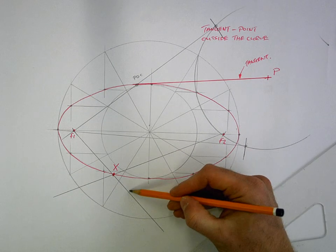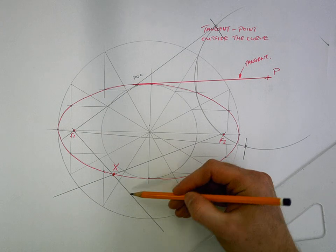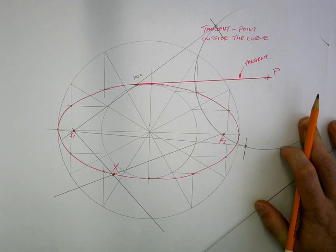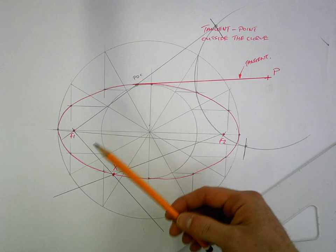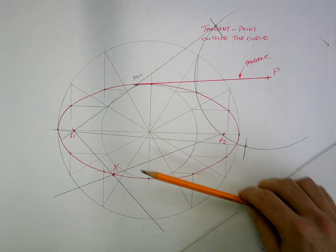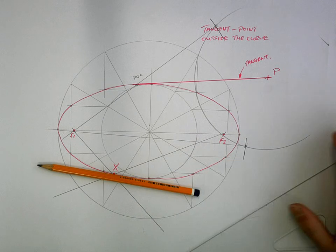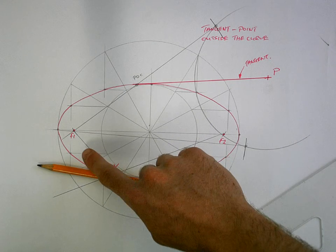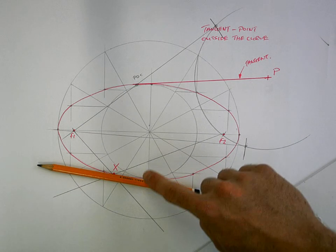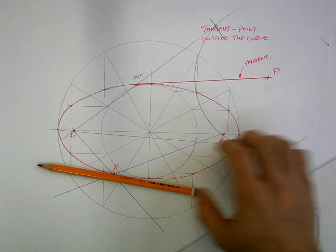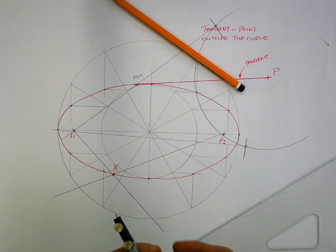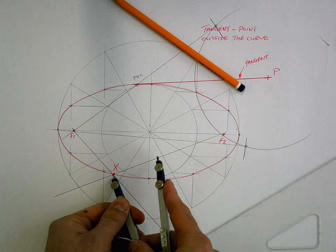What you have to do then is bisect the angle between those two lines. Now you obviously bisect the angle according to what direction you want your tangent to go in. So if I want my tangent to be going along side like that, I'm obviously bisecting either this angle or the one on the right hand side. It doesn't matter. Bisecting an angle, you should be clear on that. Use your compass for that method.